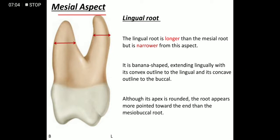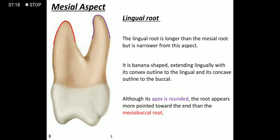The lingual root is longer and narrower — it is banana-shaped, showing a convex outline on the lingual surface and a concave outline on the buccal surface. The lingual root has a more rounded apex, though it feels pointed because of the overall morphology when considered alongside the mesobuccal root.